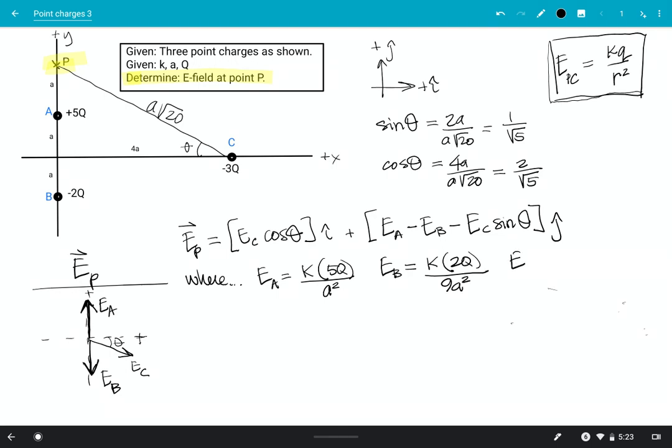And then last one, E sub C, K, C is magnitude 3Q. And then the distance between C and P, we have that figured out, A root 20. So that's going to give me 20A squared in the denominator. Okay.